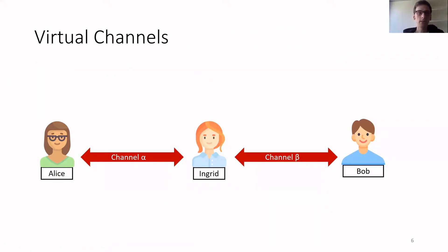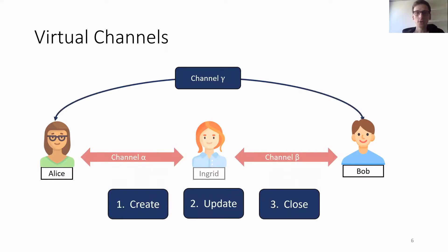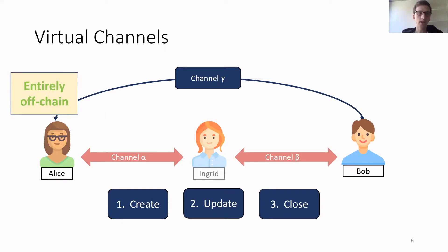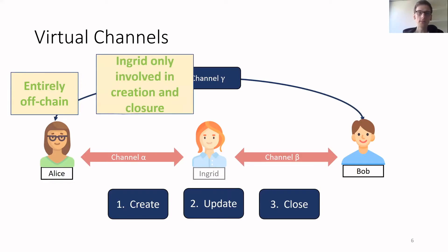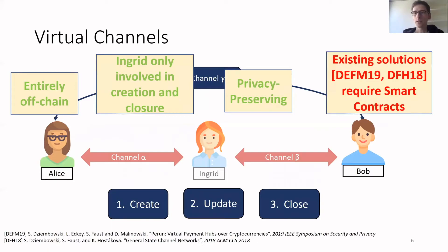There has been the proposal of virtual channels, where we have again Alice, Ingrid, and Bob with channels alpha and beta. Alice and Bob use channels alpha and beta to create a new channel gamma — the so-called virtual channel — that consists of the same procedures: create, update, and close, but with the difference that even create and close can be executed off-chain. So this protocol is entirely off-chain. Ingrid is involved only in the creation and closure, so she's not involved in each single payment, and therefore we get some privacy-preserving guarantees.